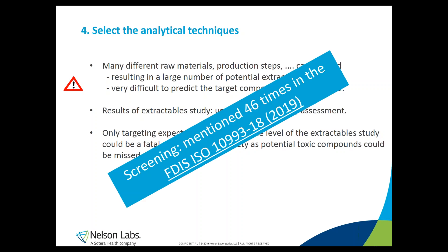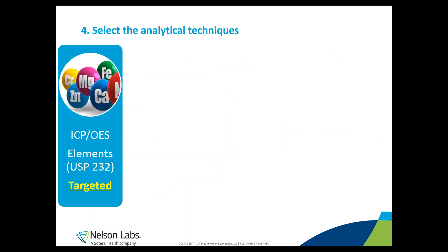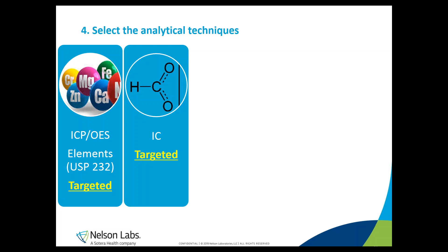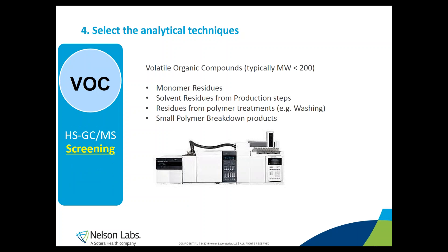Does that mean you only need to use screening methods? No, but screening is becoming more important — mentioned 46 times in the final draft. Targeted methods can be used for a limited set of compounds, such as elements targeted according to USP 232, or ions captured by ion chromatography. For organic compounds, however, there is such a large population ranging from very small to very large, from polar to very apolar, that it is advised to use at least three different analytical techniques.